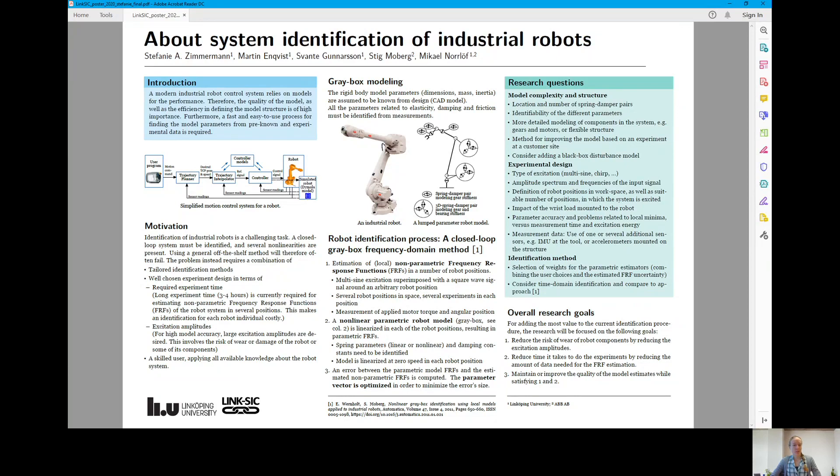Since the motion control system of an industrial robot often relies on models, there is a great interest in finding highly accurate models that are suitable for control purposes.